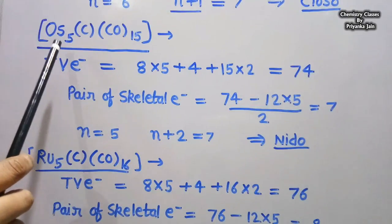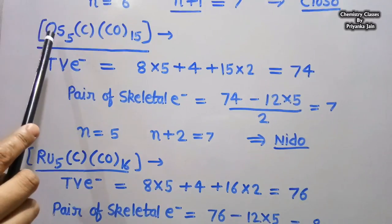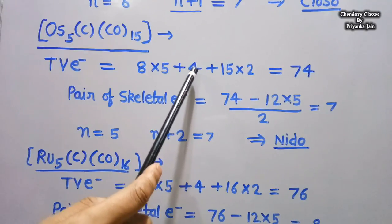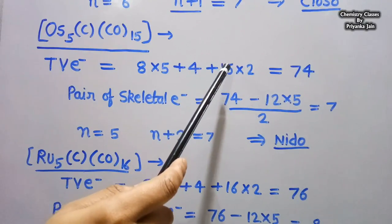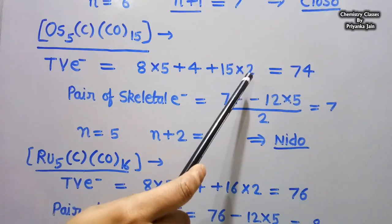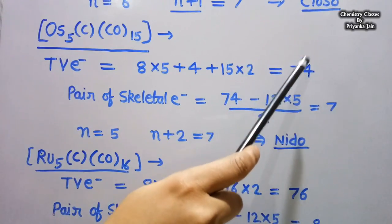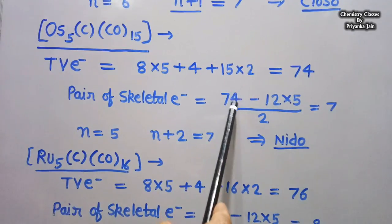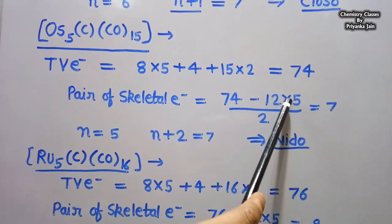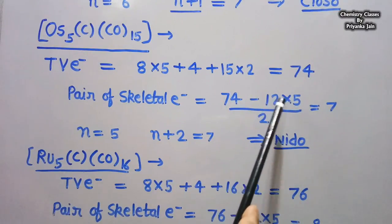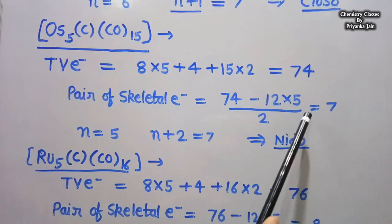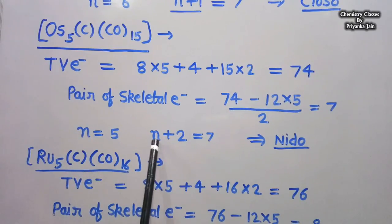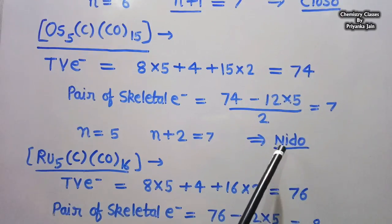For the second cluster OS5C(CO)15: osmium has 8 valence electrons, so 8×5 + 4 (from carbon) + 15×2 = 74 total valence electrons. SEP = (74 − 12×5) / 2 = 7 pairs. The number of vertices is 5. Since 7 = n + 2, this belongs to the nido group.